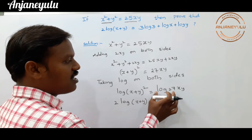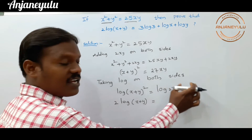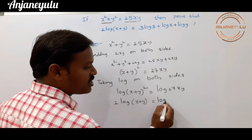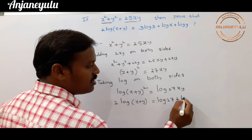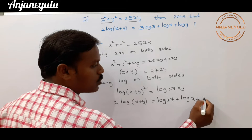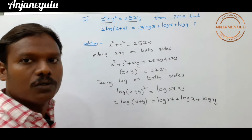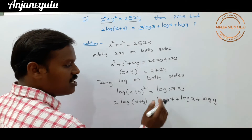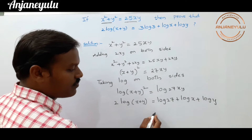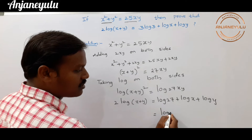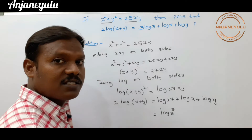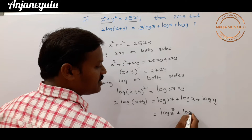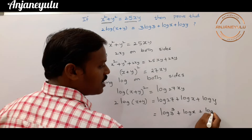On the RHS, we have log(27xy). We can use the product rule here, so we can write it as log 27 plus log x plus log y. Now log 27 can be written as log 3³, since 3 × 3 × 3 equals 27.